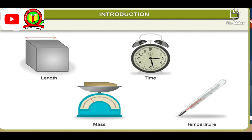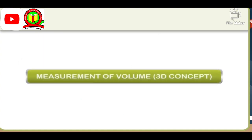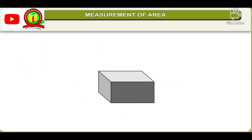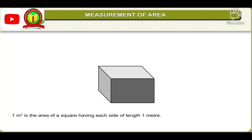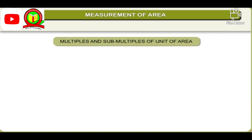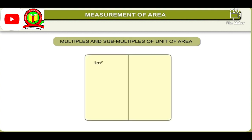In this chapter, we will learn about some indirect methods of measuring various physical quantities. Area is the measure of surface occupied by a body. The SI unit of area is square meter. 1 square meter is the area of a square having each side of length 1 meter. A small unit of area is 1 square centimeter. 1 square meter is equal to 10,000 square centimeters.